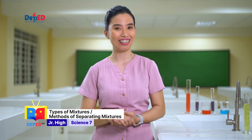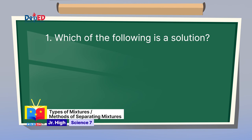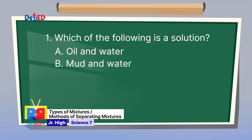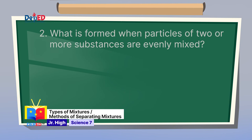Let's see how well you understood today's lesson. Let's answer the assessment. Number 1: Which of the following is a solution? A. Oil and water. B. Mud and water. C. Sand and water. D. Sugar and water. The solution is sugar and water because particles of sugar are mixed together with water. The correct answer is letter D.